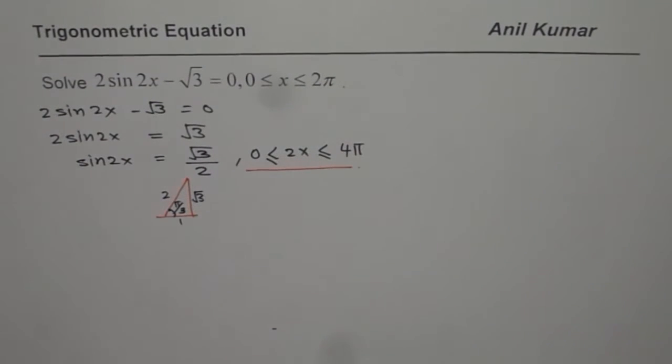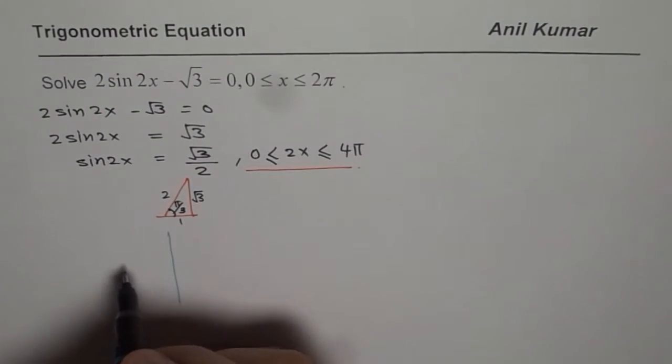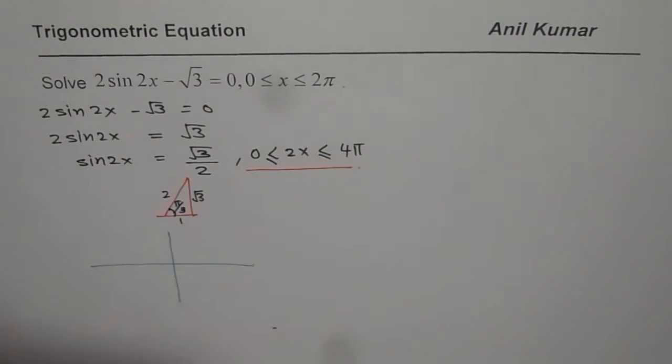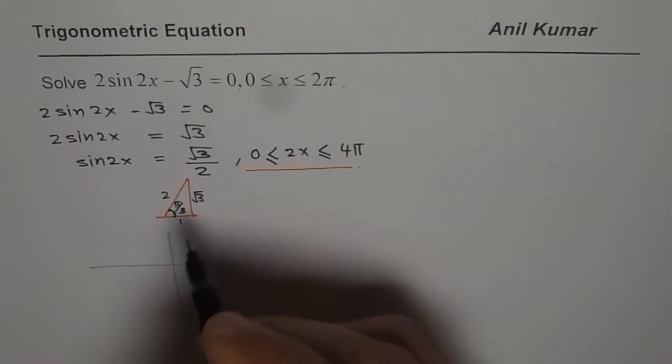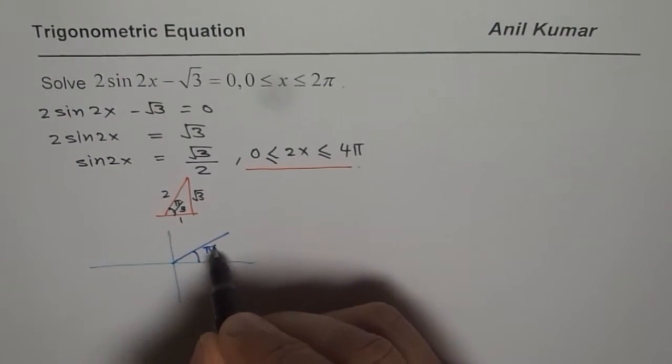So the whole idea here is that we have to look for the values within 0 to 4π for sin 2x, then the solution will be between 0 to 2π. The first step we have already done: we found the acute angle as π by 3.